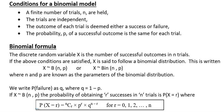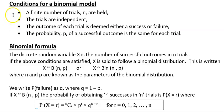The first condition is you've got a finite number of trials. So that's maybe 10 people going into a shop and you're asking how many people buy something or don't buy something. The 10 is the number of trials. Or maybe the probability of a goal being scored — if 10 matches are played, your n is 10.